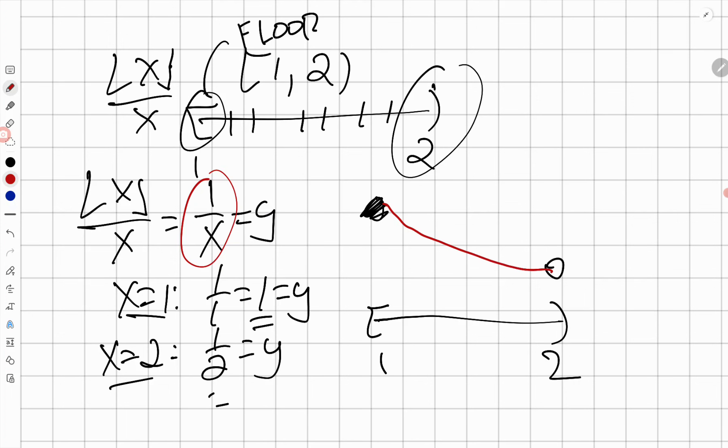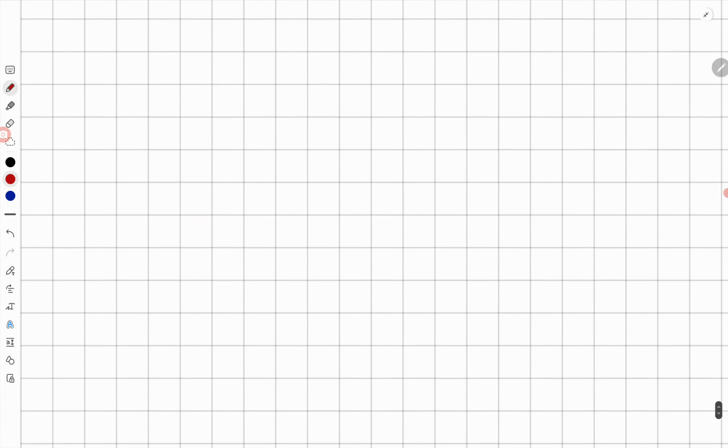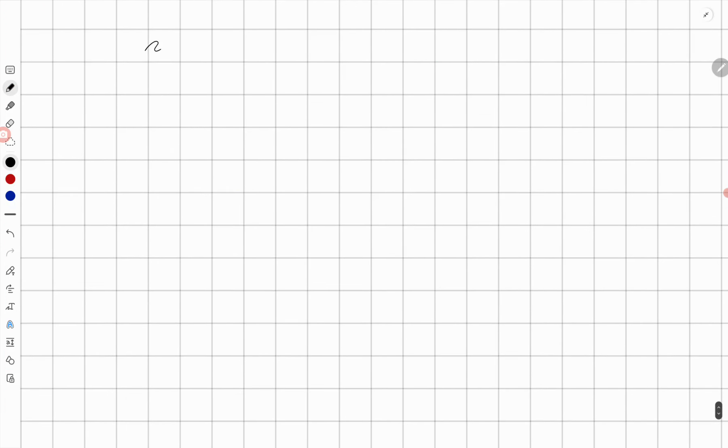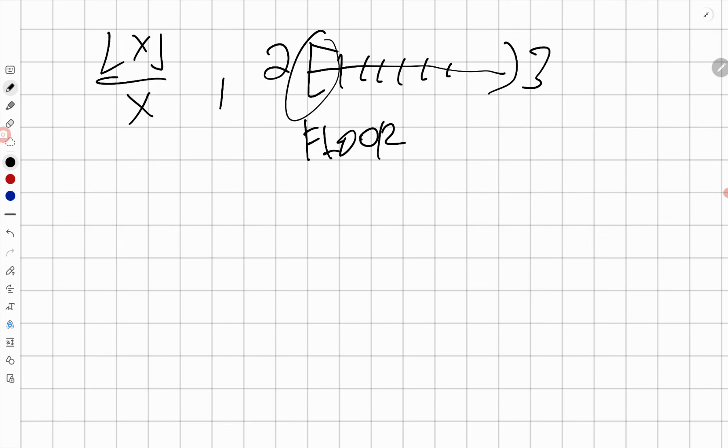All right, let's do one more piece here. So I'm going to go again, floor of x over x, and we want to do this over, this time, two bracket and then two, three, parentheses. Again, any number that you take from here—2.1, 2.2, 2.99—this part is the floor. So that means the floor of x over x just becomes two over x.